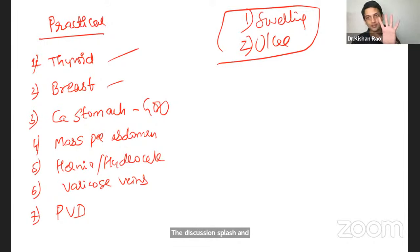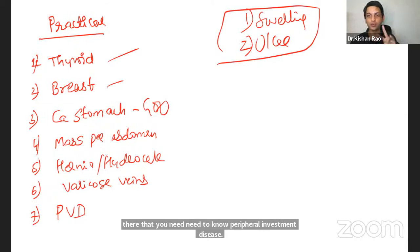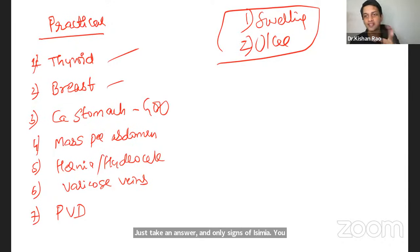And hernia, those five tests, five tests like get above the swelling, cough impulse, and deep ring occlusion, Zieman's test, and finger invagination. These five tests for hydrocele and hernia. If you know, that's done, hernia case is done. Varicose veins also. There's four or five special tests are there that you need to know. Peripheral vascular disease, just like an ulcer. And only signs of ischemia, you should be knowing. And how to differentiate between arterial, venous, and neuropathic ulcer. If you know this much, see, any surgical case, you can easily deal with.